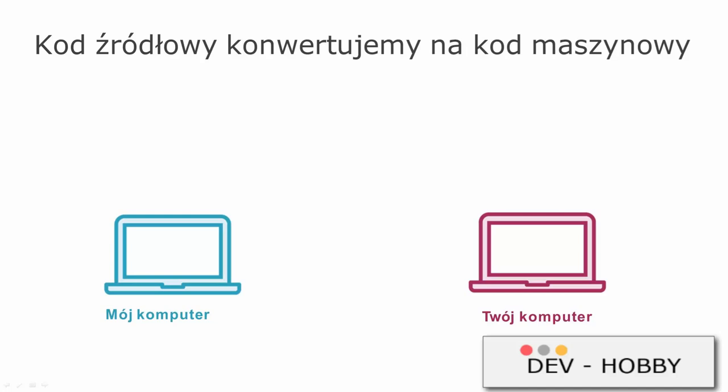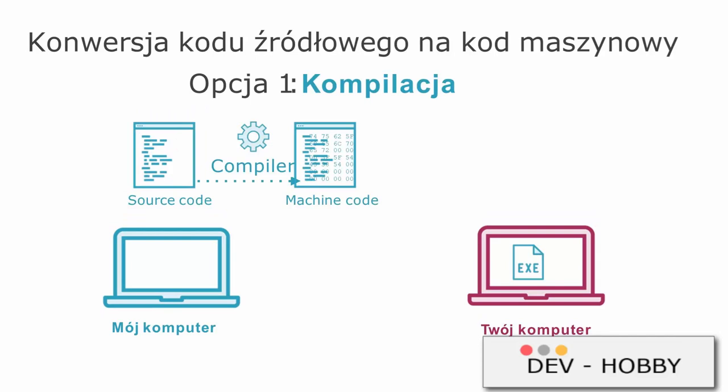The difference between compilation and interpretation is not what happens, but when the conversion to machine code occurs. Imagine I wrote a simple program — I wrote the source code on my computer and I want you to run it on your computer. Option one is compilation. A compiler is a tool that parses my source code file, statement by statement, and transforms it into machine code. The result is a new executable file that your processor can understand and run directly. After compilation, I give you this finished file. As a result, you do not have access to my source code and don't even know which programming language it was written in.